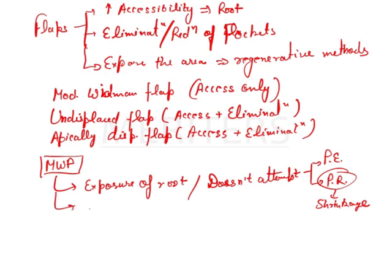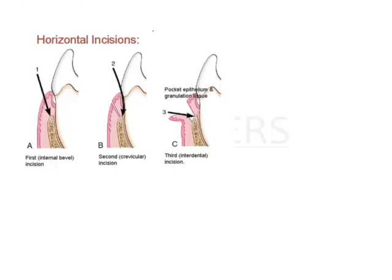Another feature of this technique is that it removes the pocket lining. There are three incisions used in the modified Widman flap. The first incision is the internal bevel incision, also called the reverse bevel incision, placed at 0.5 to 1 mm from the gingival margin.